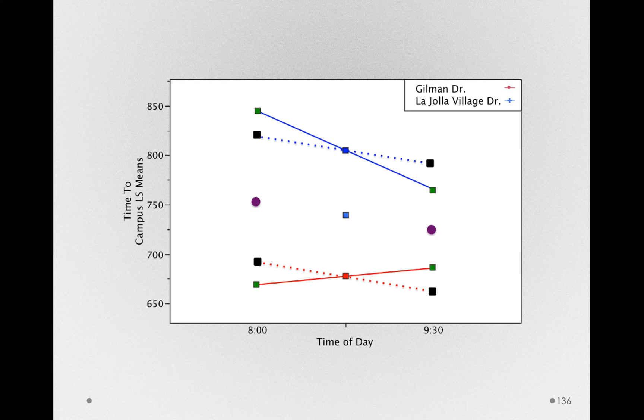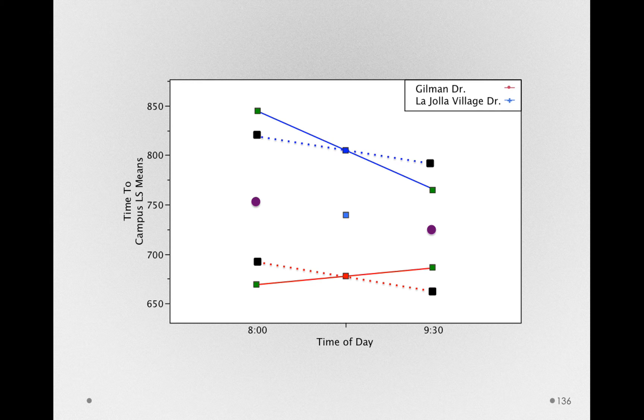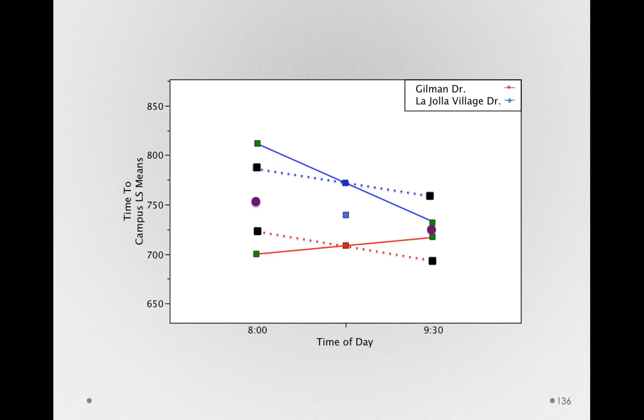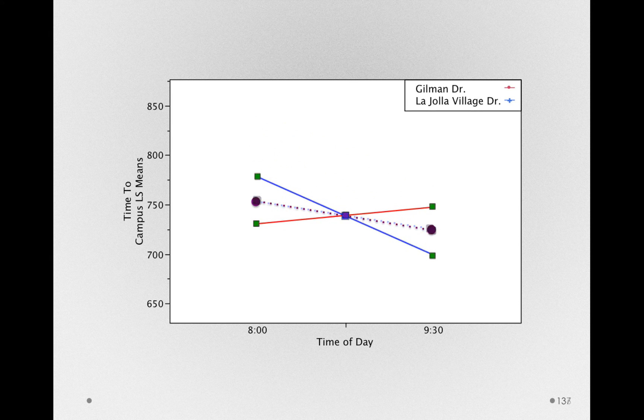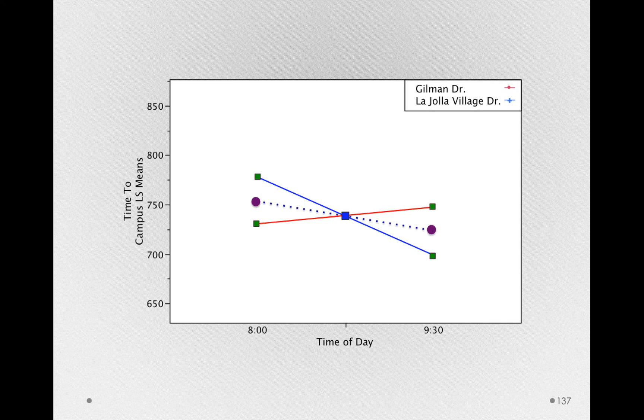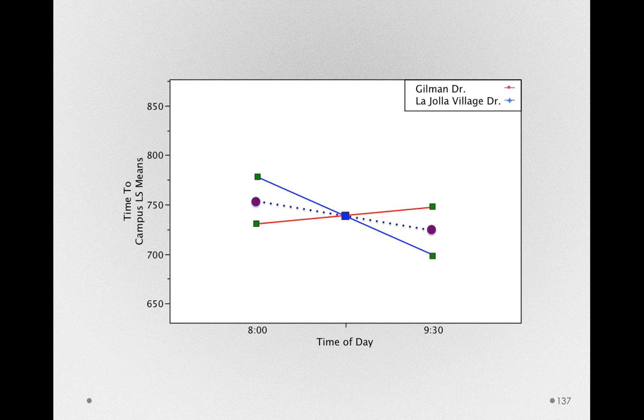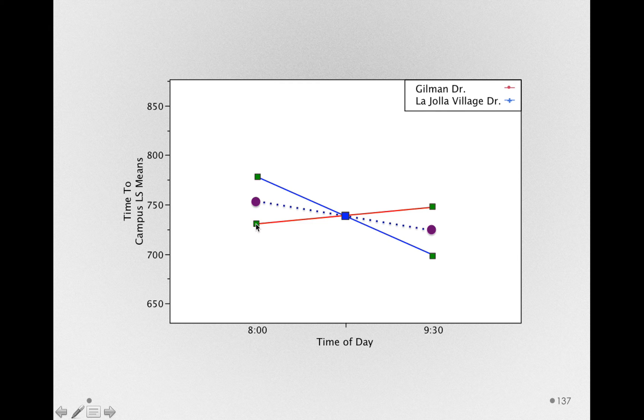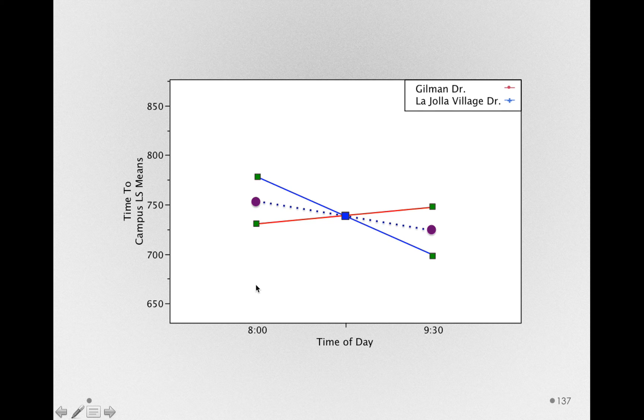Now, to really see this, let's ignore the fact that Gilman Drive was, on average, faster than La Jolla Village Drive. And by that I mean, let me simply bring together these purely additive lines at the origin. And I hope what you can see is, in order to keep the time of day means correct, that is, the average at 8am and the average at 9:30am, we'll have to pivot the means for Gilman Drive and La Jolla Village Drive. For instance, what if we wanted to move the mean for Gilman Drive at 8am to be lower? What if it took, on average, less time in that group mean?